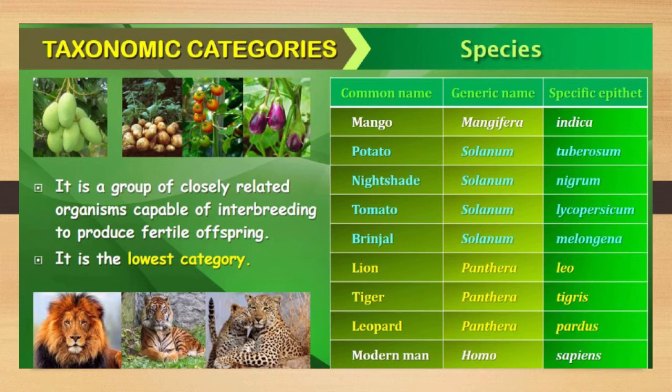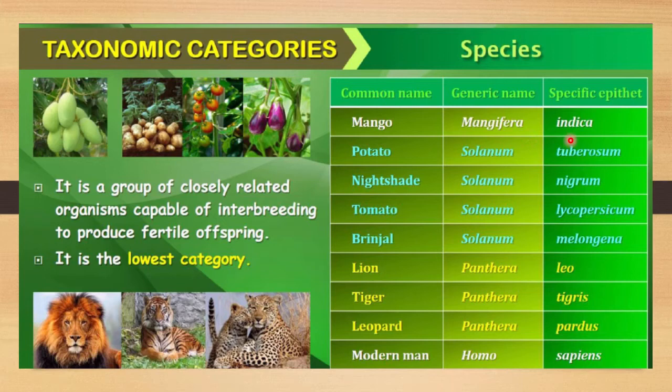Now let me start with species in detail. Species is a group of closely related organisms capable of interbreeding to produce a fertile offspring. It is the lowest category of any taxonomic classification. For example, the common name mango has the scientific name Mangifera indica. As you know from binomial nomenclature, the first name indicates the genus and the second name indicates the species.